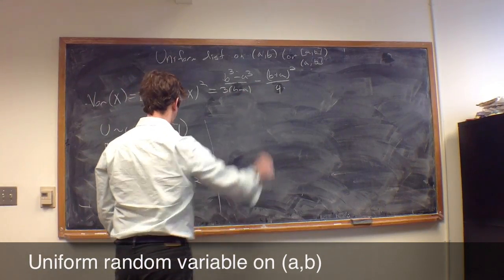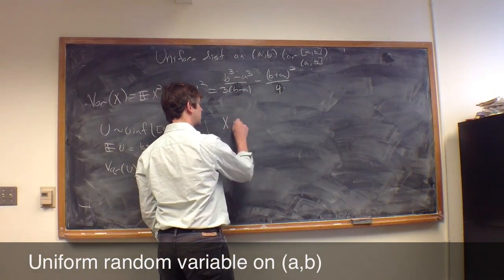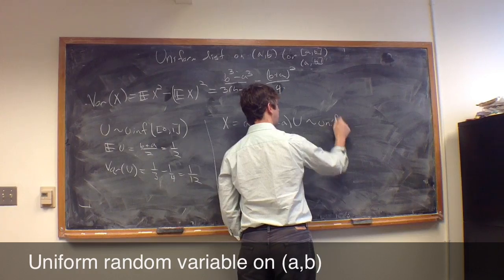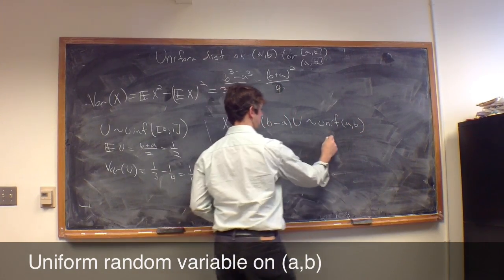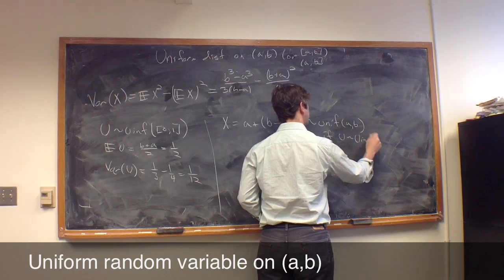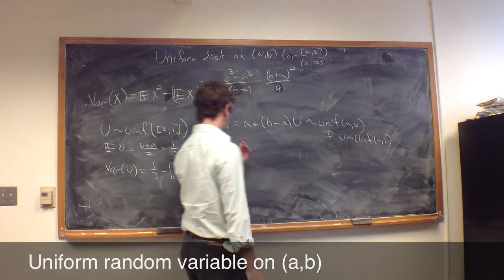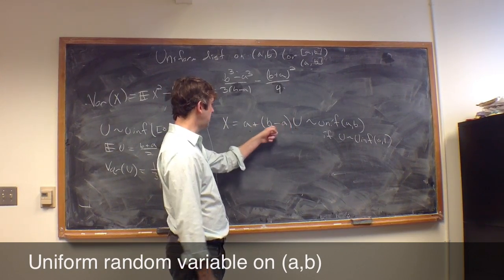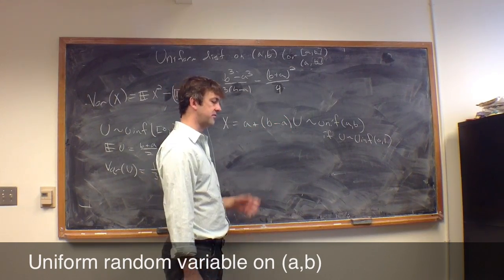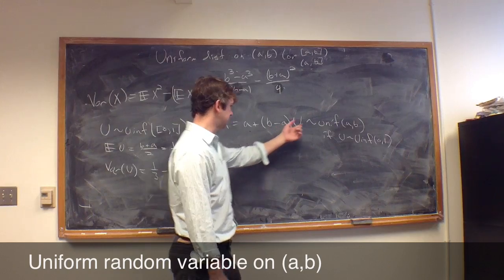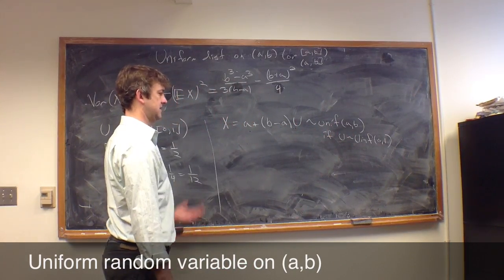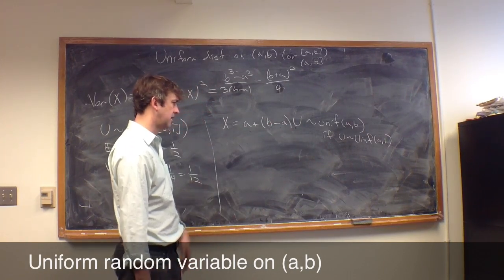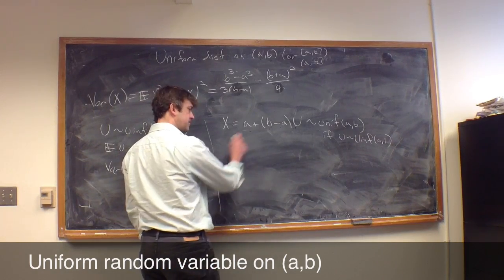Now, how is that useful for simplifying this? I claim that X = a + (b-a)U is actually distributed uniform on (a,b) if U is distributed uniform on (0,1). So I've built a uniform (a,b) out of a uniform (0,1). Look, if U is 0, this thing is 0 and we get a. If U is 1, I get (b-a) + a which is b. So clearly the range is (a,b). And because this is uniform over the whole interval, the density function doesn't change.